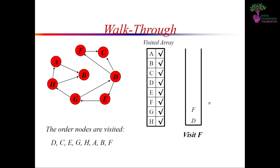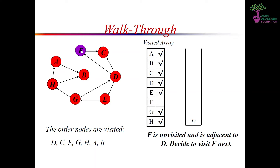We have traversed through the entire graph, visiting each vertex once, in this particular order: D first, then C, then E, G, H, A, B, and finally F.